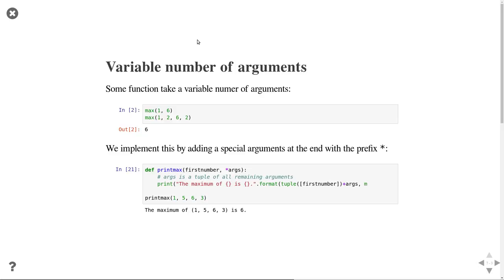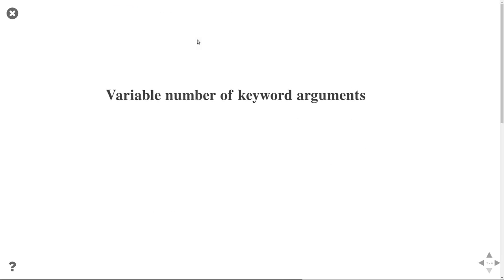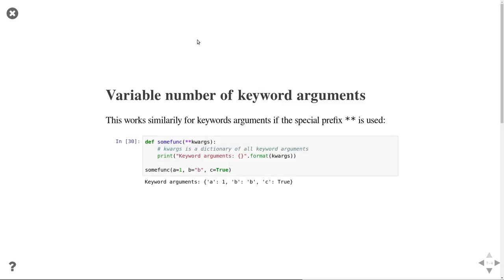So you can operate on these arguments — for example, look at the first argument and loop over all the remaining arguments that you passed in. This is how you make functions that take an arbitrary number of arguments. This also works if you have keyword arguments, in which case you use the double star prefix in the function definition.